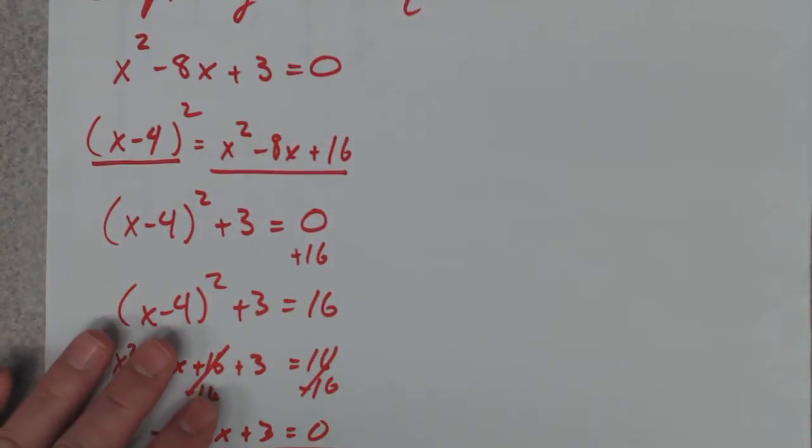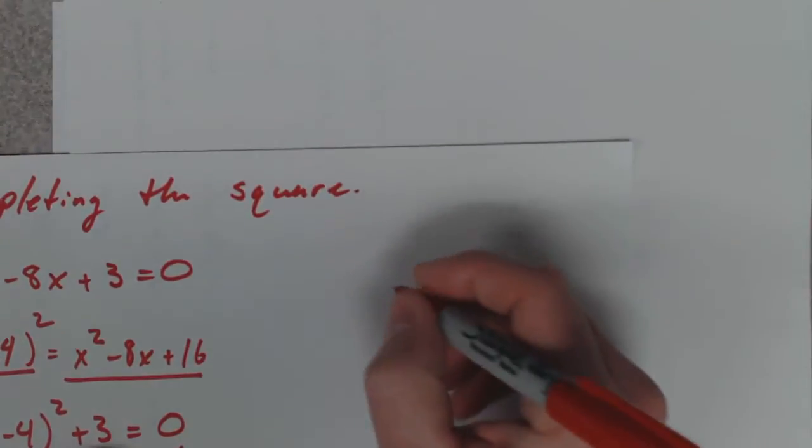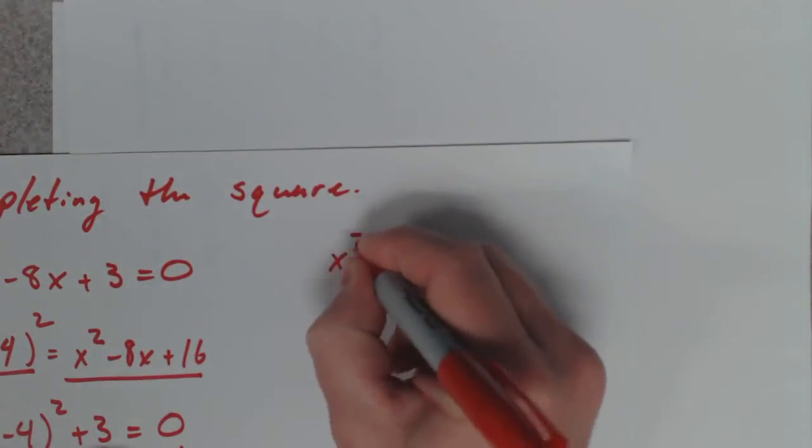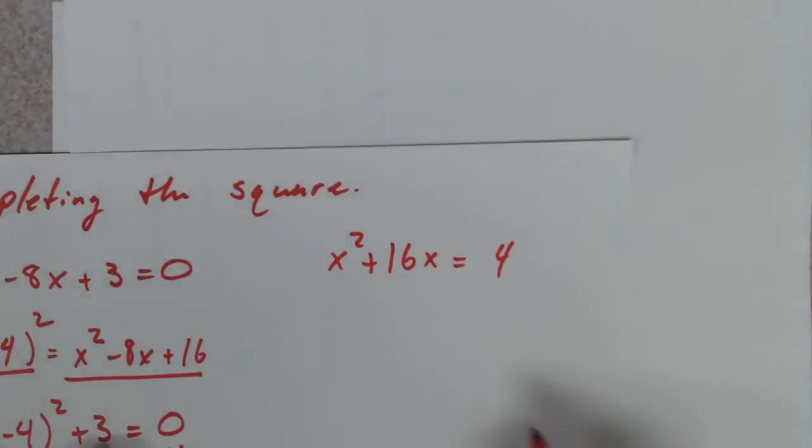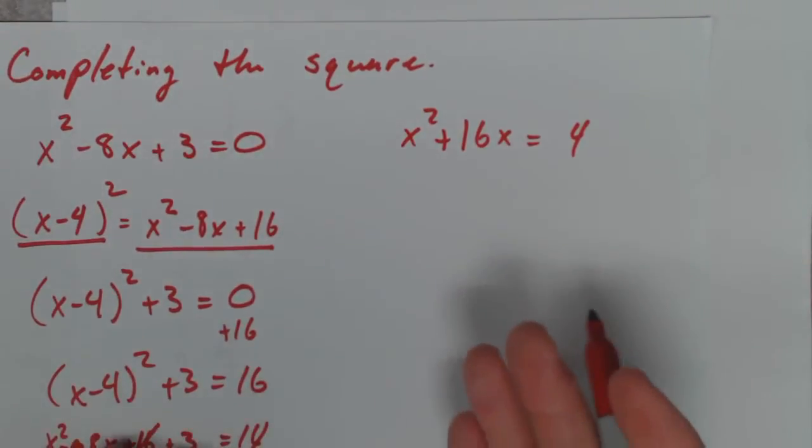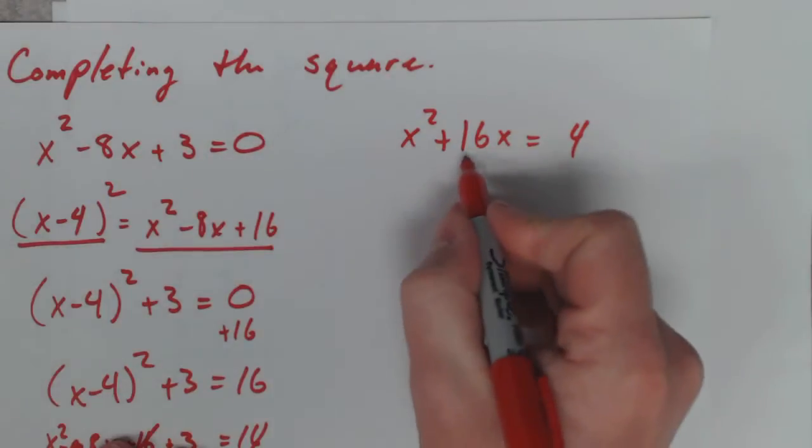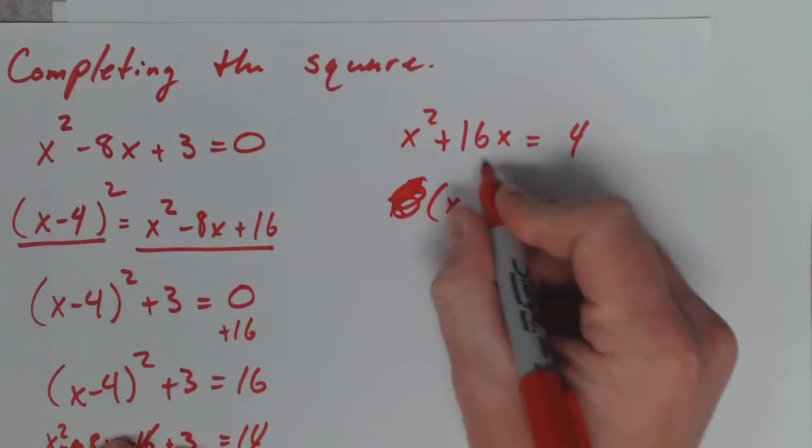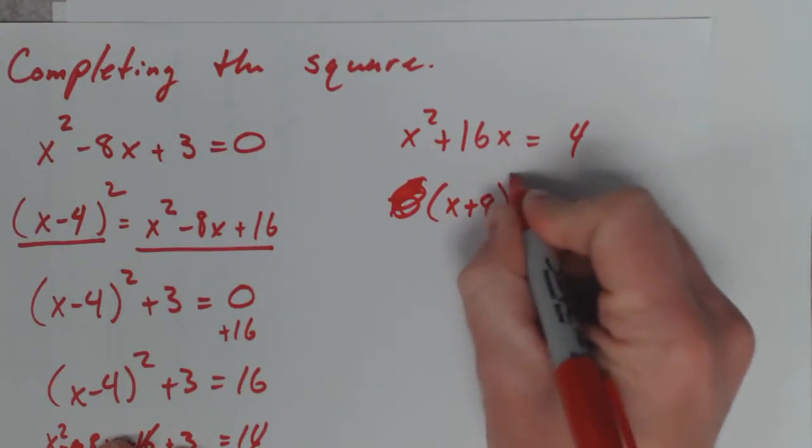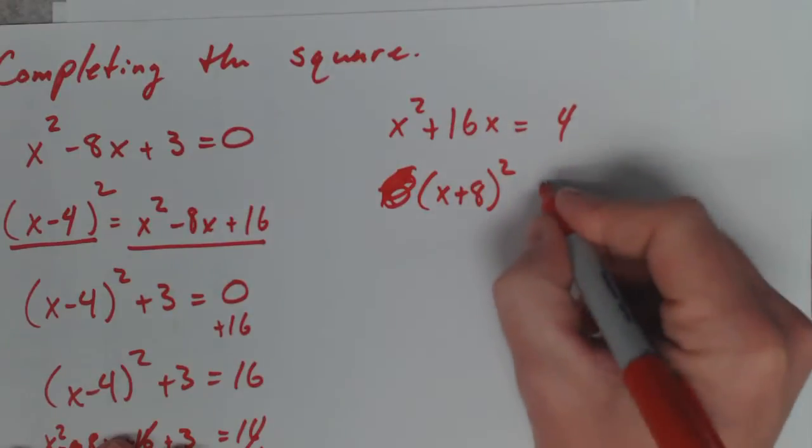So, let's try another one. Let's try one like x squared plus 16x equals 4. Let's just rewrite it by completing the square. You take half of 16. Take half of 16. You get positive 8.